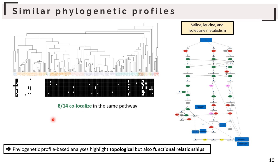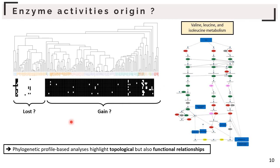This phylogenetic profile-based analysis highlights topological but also functional relationships. But does this clade lose these enzyme activities, or do other clades gain these enzyme activities during evolution? To trace back the evolutionary history of each enzyme activity, we use a phylostratigraphy approach to determine which enzyme activities have been lost and which are novel and specific enzyme activities.